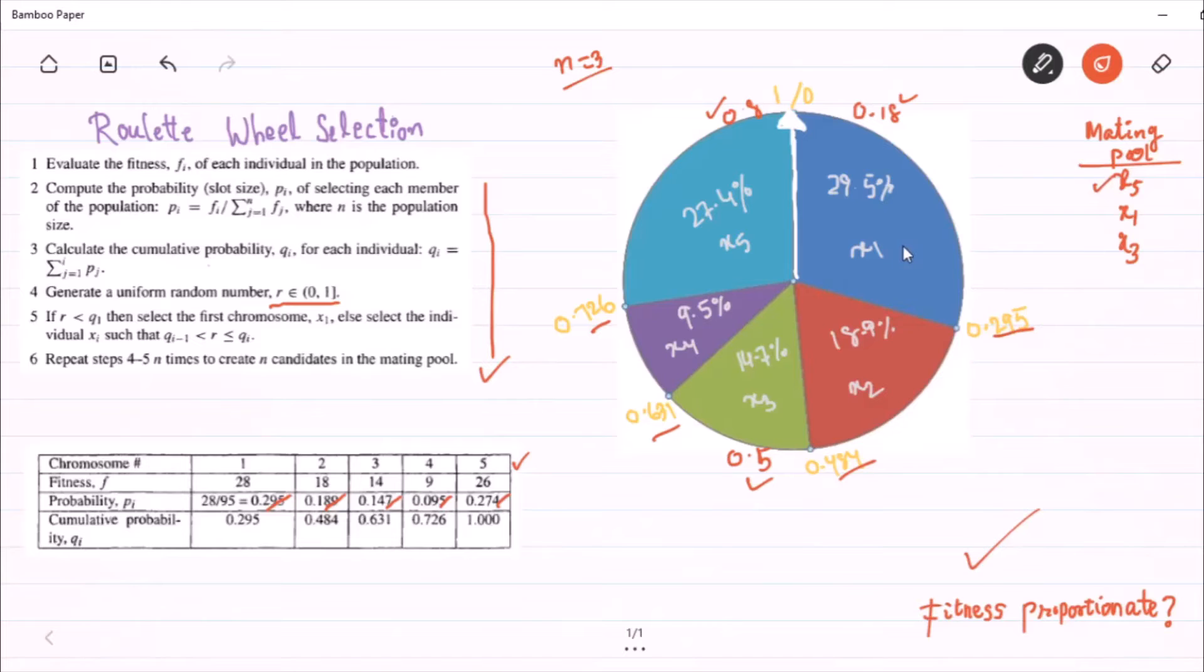For example, x1 has the highest score. So, the fitness value of x1 is the highest, so it is most likely to be part of the mating pool, because it occupies a larger portion of the wheel.